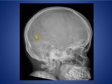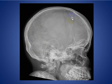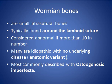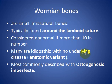You see multiple wormian bones, especially around the lambdoid suture, and these are also extended around the coronal suture. Wormian bones are small intrasuture bones typically seen around the lambdoid suture, considered abnormal if more than 10 in number. They are usually idiopathic with no underlying cause, a normal anatomical variant, and commonly seen in osteogenesis imperfecta.